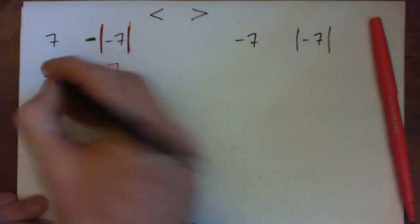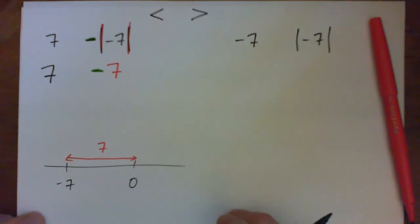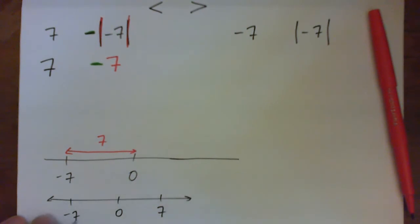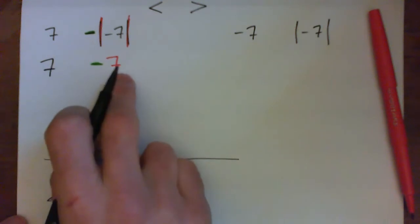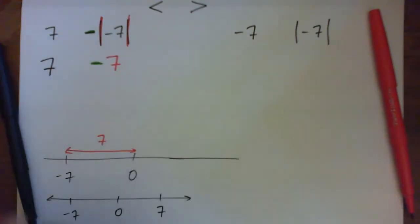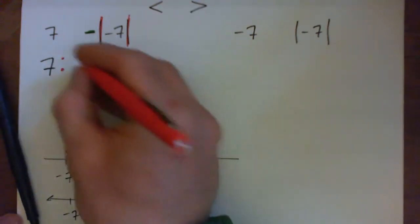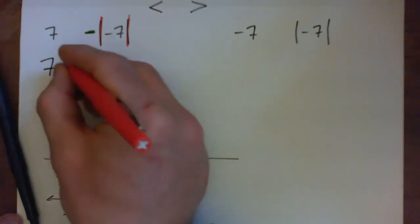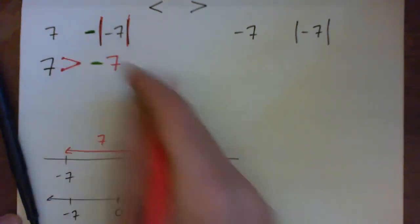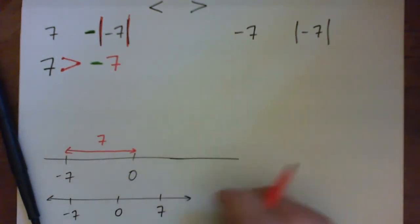So we have 7 on the left, negative 7 on the right. Which is more? Well, again, think about a number line. Here's negative 7, here's 0, here's 7. And of course 7 is to the right of negative 7, so it's a larger number. 7 dollars is better than a debt of 7 dollars. So that's why the 7 gets the gap of the inequality sign and the negative 7 gets the point. 7 is greater than negative 7.